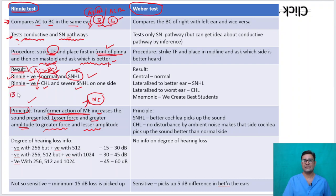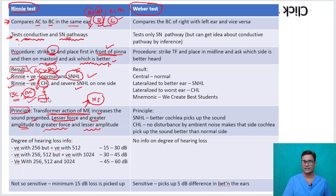Rinne's negative means bone conduction is better than air conduction. This happens when air conduction is not functioning properly, as seen in conductive hearing loss, where the middle ear cannot conduct sound properly and the transformer action is not functioning. It is also seen in severe sensorineural hearing loss.